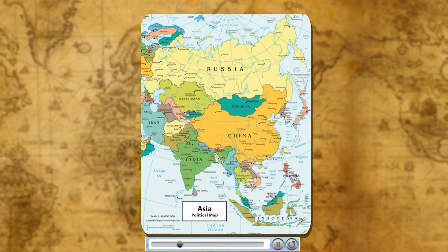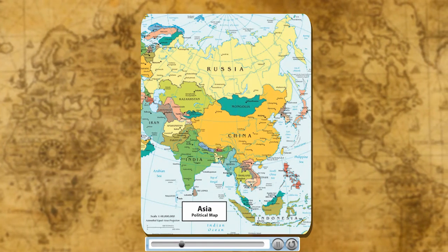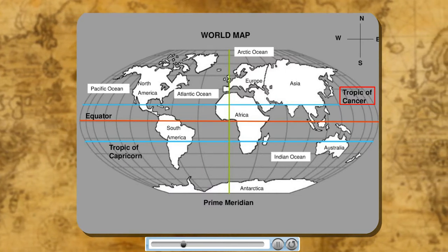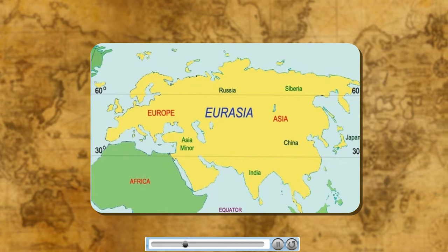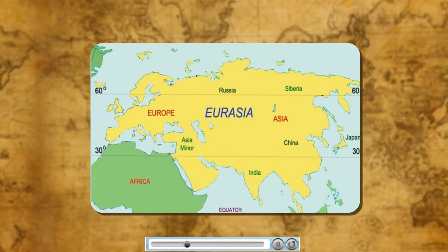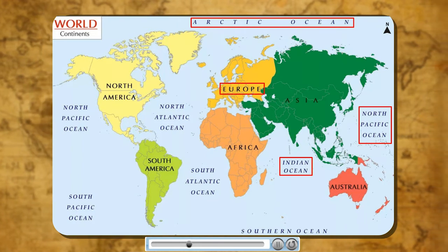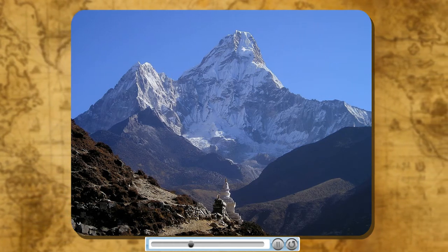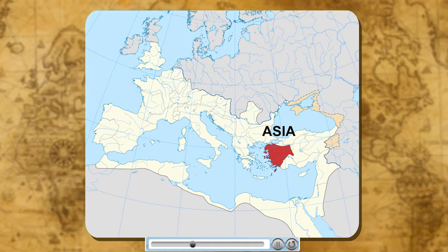Asia is the largest continent in terms of both area and population. It extends from about 10 degrees south to 80 degrees north latitudes and from about 25 degrees east to 170 degrees west longitudes. It covers about one-third of the total land area of the Earth. The Tropic of Cancer passes through this continent. The continent lies in the north-eastern hemisphere. Asia is separated from Europe by the Ural Mountains on the west. The combined land mass of Europe and Asia is called Eurasia. Asia is surrounded by the Pacific Ocean in the east, the Arctic Ocean in the north, and the Indian Ocean in the south. The highest point of the earth, Mount Everest at 8,848 meters, and the lowest part of the earth are found in this continent. Therefore, Asia is known as the continent of extremes.